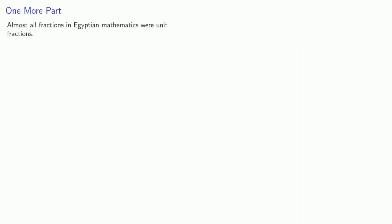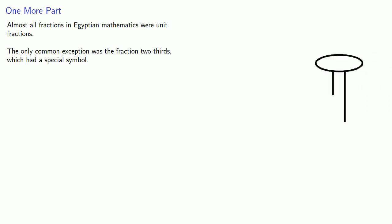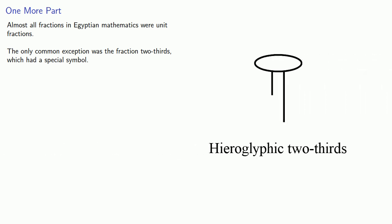Now, almost all fractions in Egyptian mathematics were unit fractions. The only common exception was the fraction two-thirds, which had a special symbol. We usually designate this in modern typography as three with two lines over it.